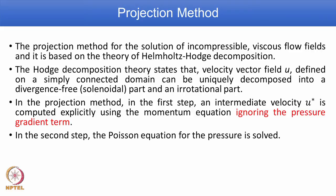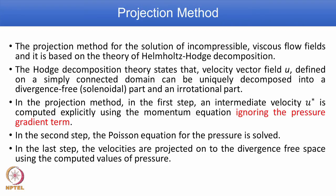Dropping the pressure gradient term leaves only convection, diffusion, and source terms, giving an intermediate velocity field denoted U-star. Pressure is then introduced by setting up a pressure Poisson equation — an elliptic equation — which is solved to get pressure, and then velocities are corrected. In the last step, velocities are projected onto the divergence-free space using the computed pressure, so the corrected velocity U-star and V-star satisfy the divergence-free continuity equation condition.